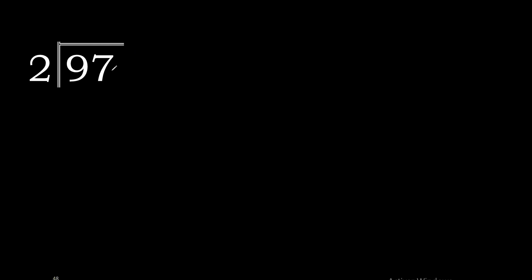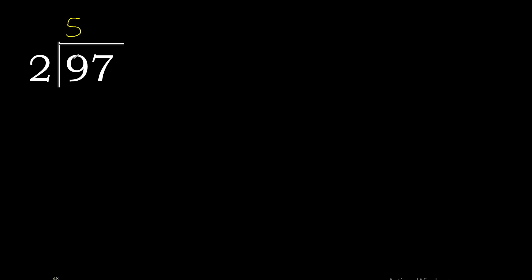97 divided by 2. 9 is not less than 2, so we work with 9. 2 multiplied by 5 is 10 — too much. 2 multiplied by 4 is 8, which is the closest. 9 minus 8 is 1.